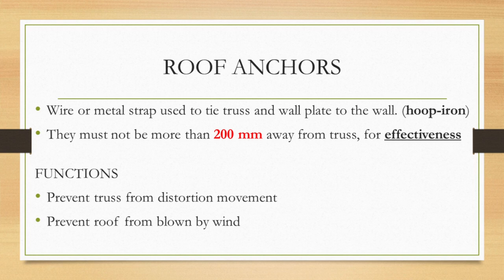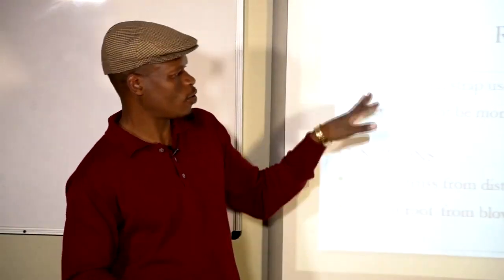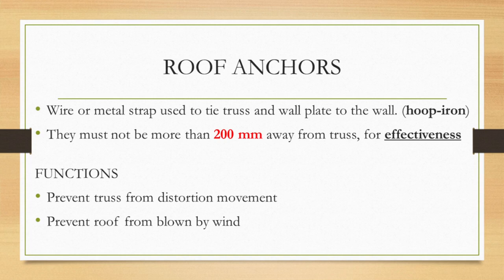Regarding roof anchors: the roof anchors must be tied down into the building so that the roof is fully connected and forms one structure. You can use a standard wire or a metal strap — hoop iron — to tie down the wall plate together with the roof and against the wall. There must be effective communication between the builder and the roof erector so that they know exactly where to put the hoop irons. If they don't communicate, the hoop iron will be placed where the roof was not sitting, making it ineffective. The function of the roof anchor is to prevent the roof from distortion and warping.